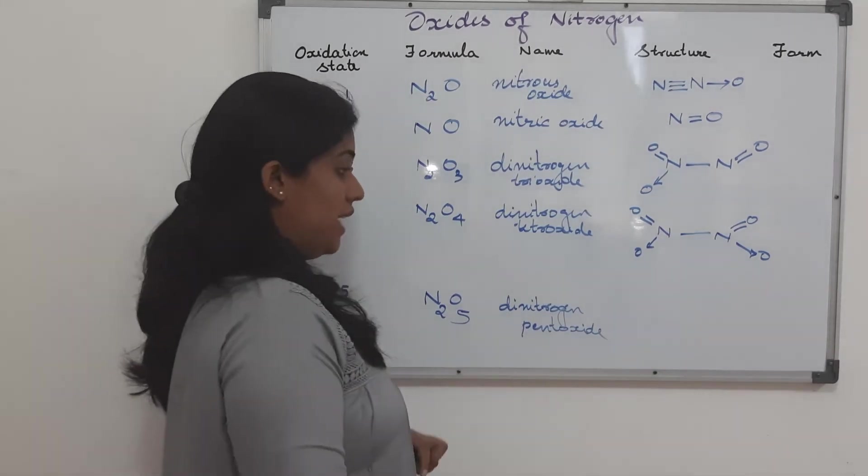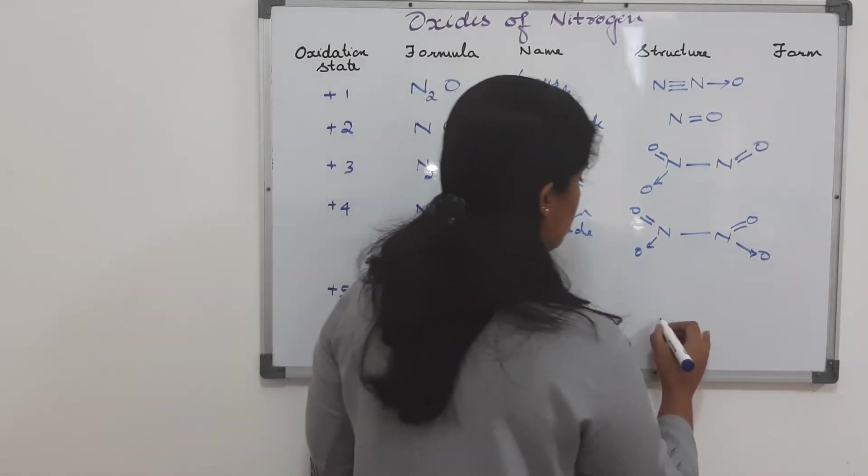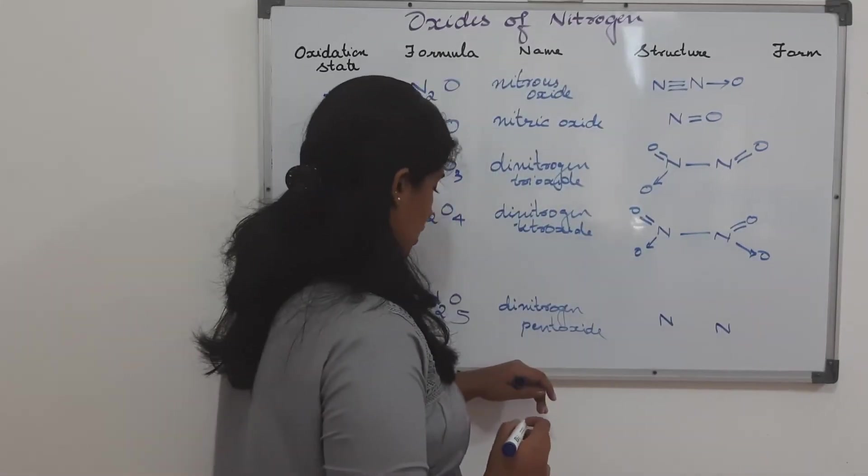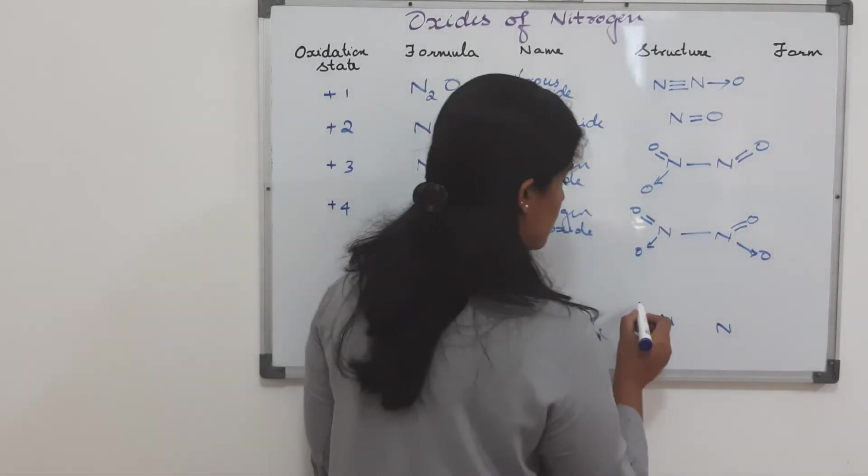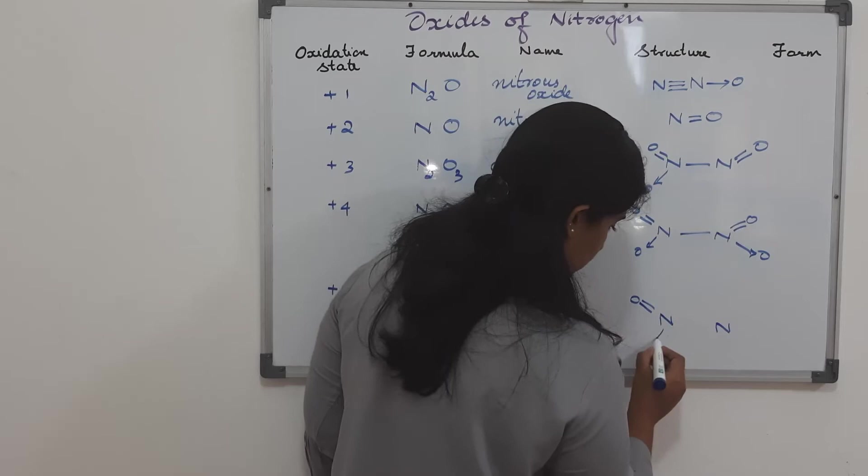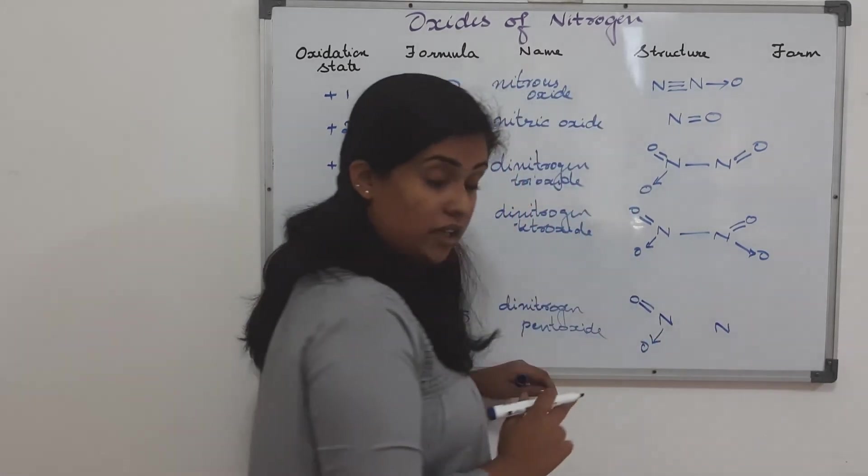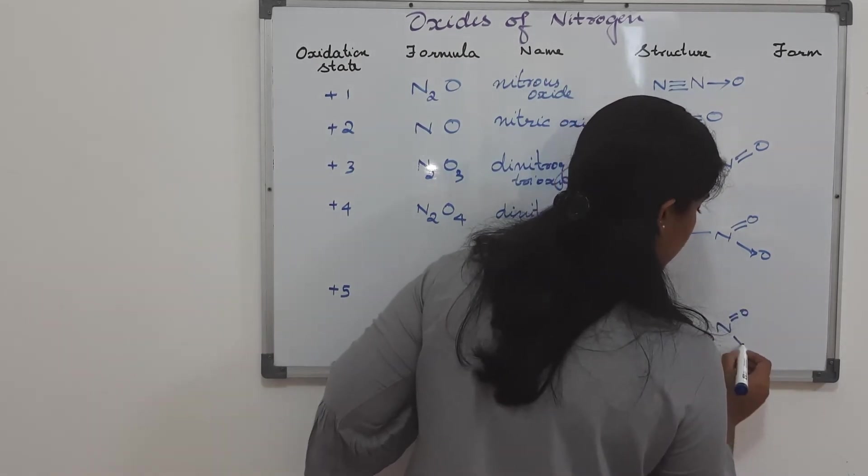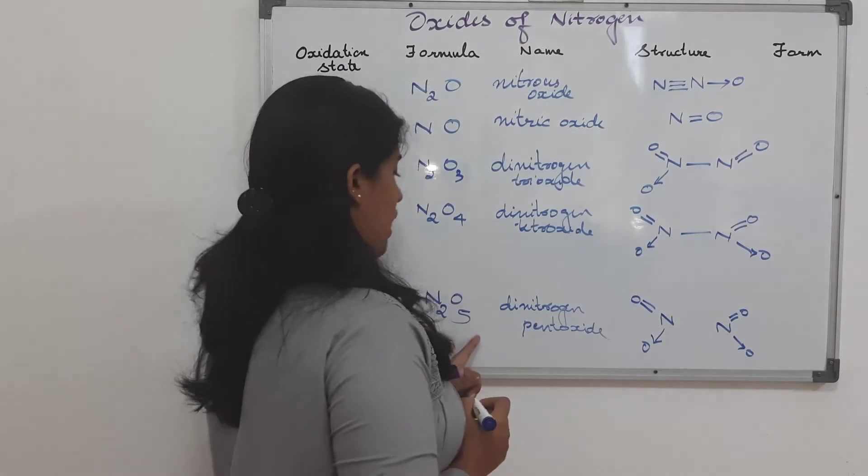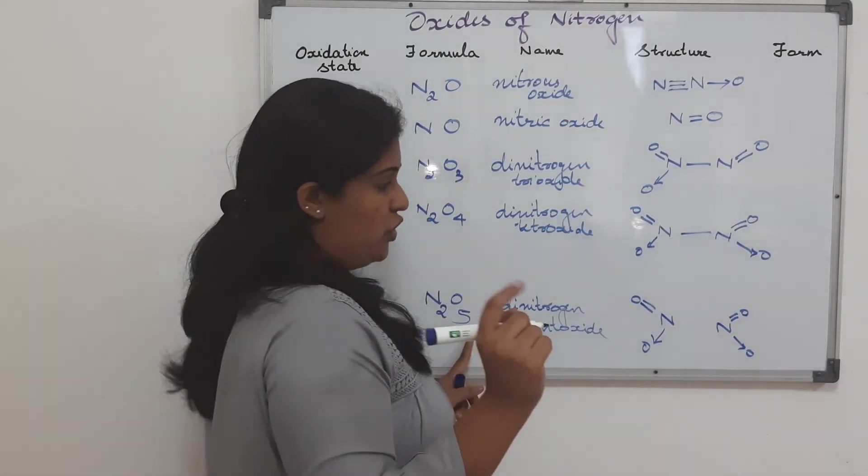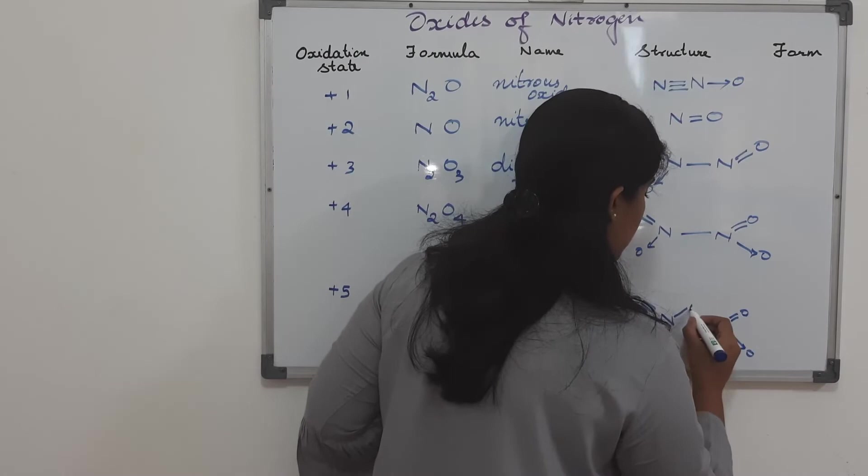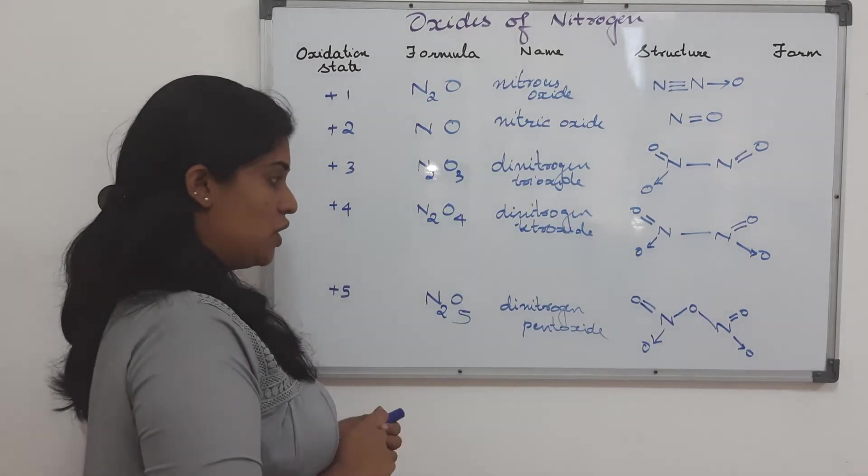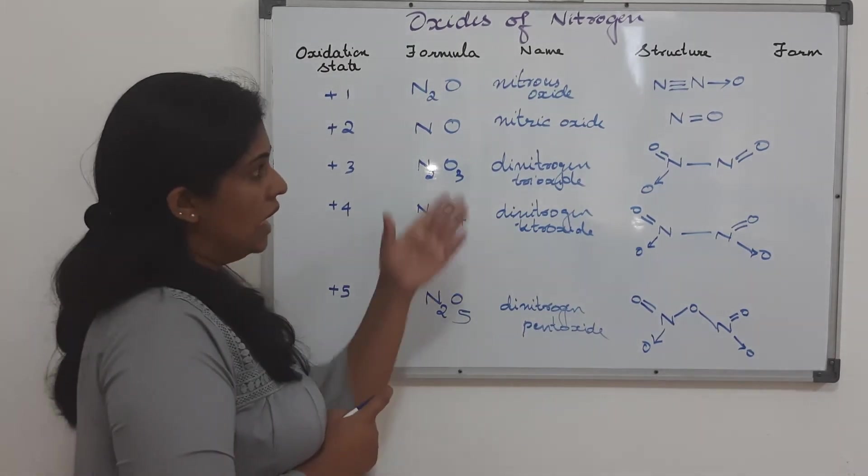And finally, we have dinitrogen pentoxide. So, again, similarly, we will put one nitrogen here, one nitrogen here. Then, out of the five oxygens, two oxygens will go for this. One of them is double bonded, the other being dative. And similarly, the other nitrogen also will get a double bonded oxygen and a datively bonded oxygen. And now, we have one more oxygen, and that will be like a bridge between the nitrogens like this. Now, this is dinitrogen pentoxide.